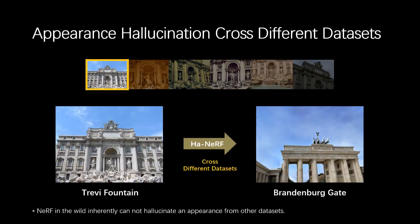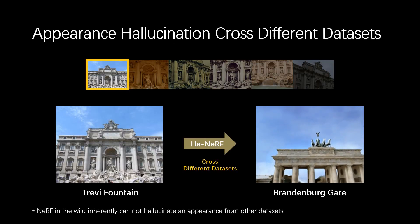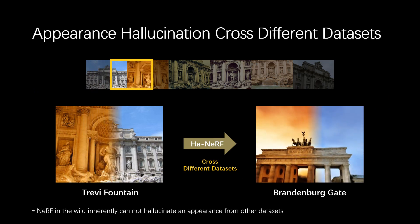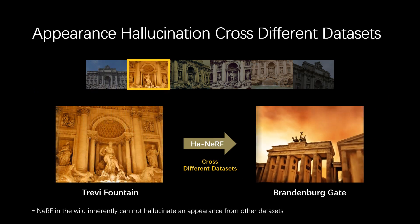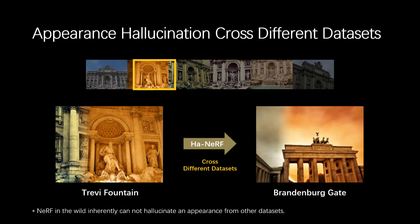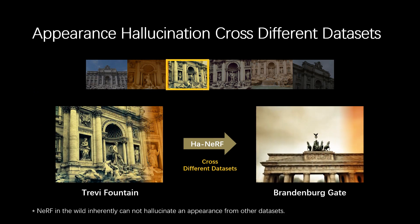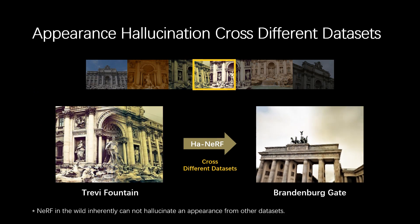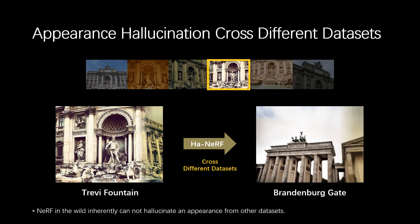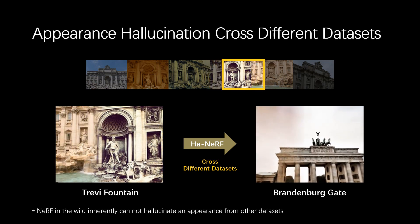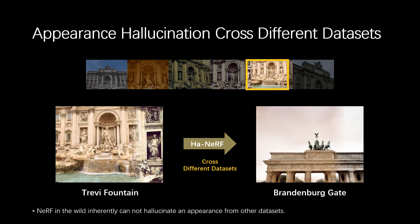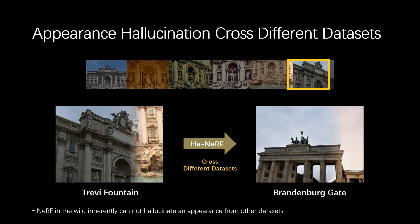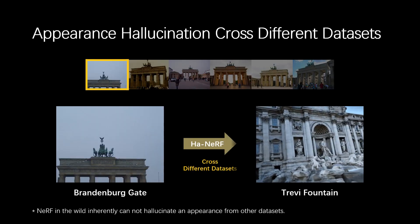Encoding appearance with an encoder allows our framework to perform example-guided appearance transfer even from a different dataset. As shown here, we hallucinate a new appearance of the Brandenburg Gate conditioned on the example image of Trevi Fountain, and vice versa.